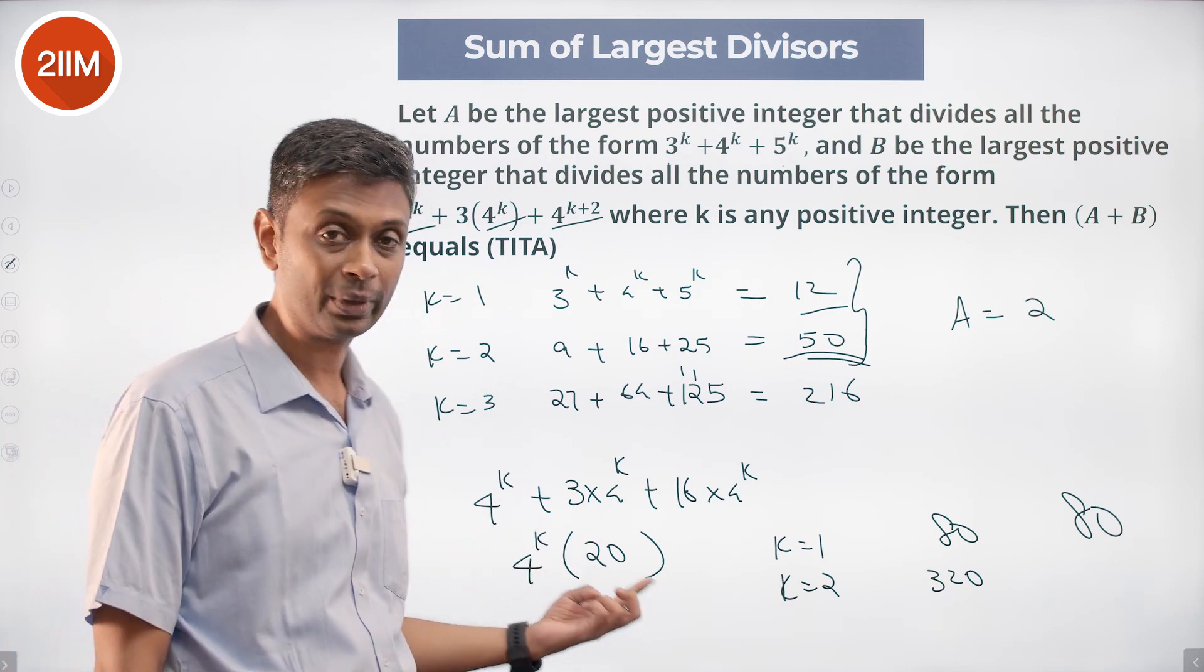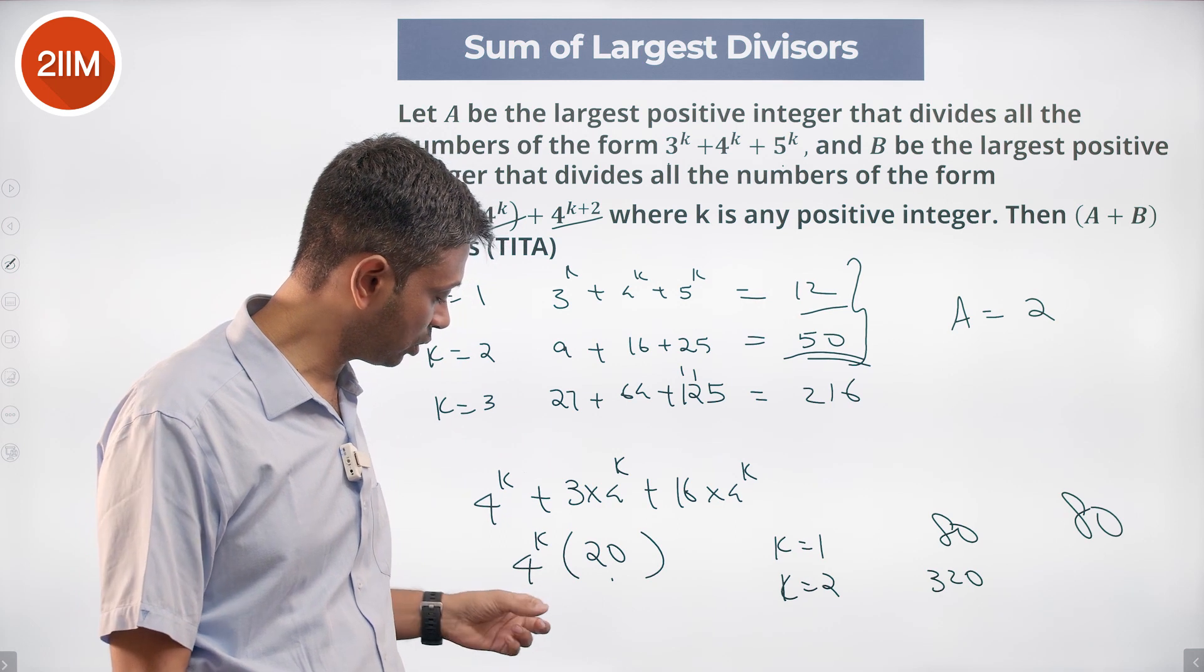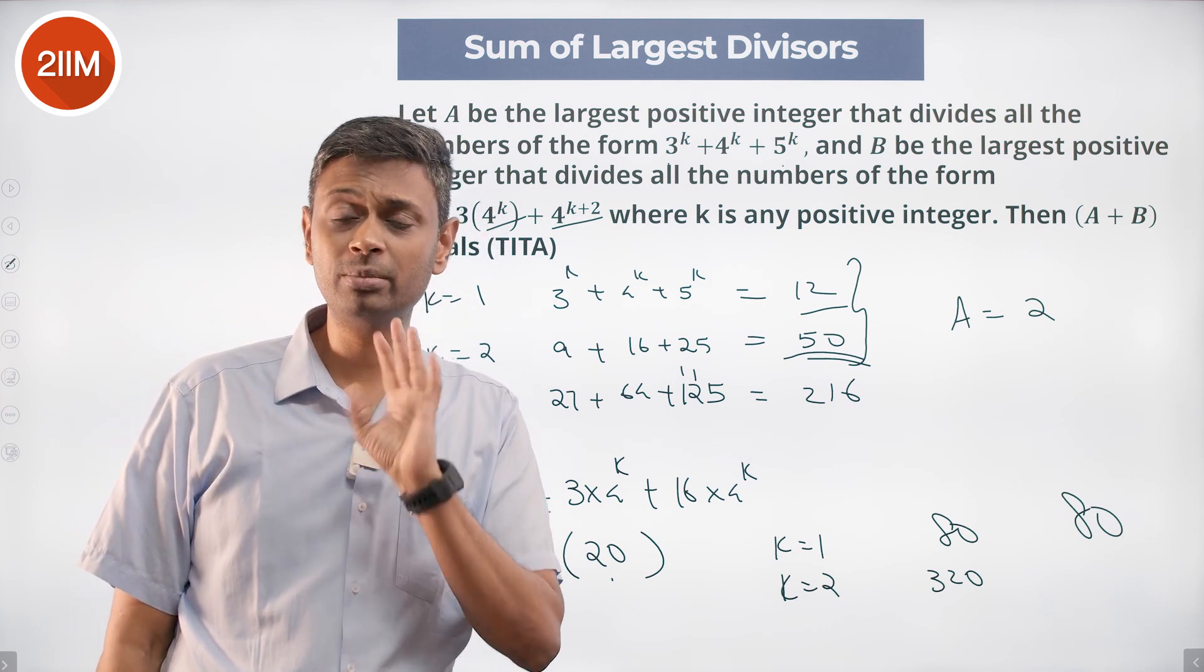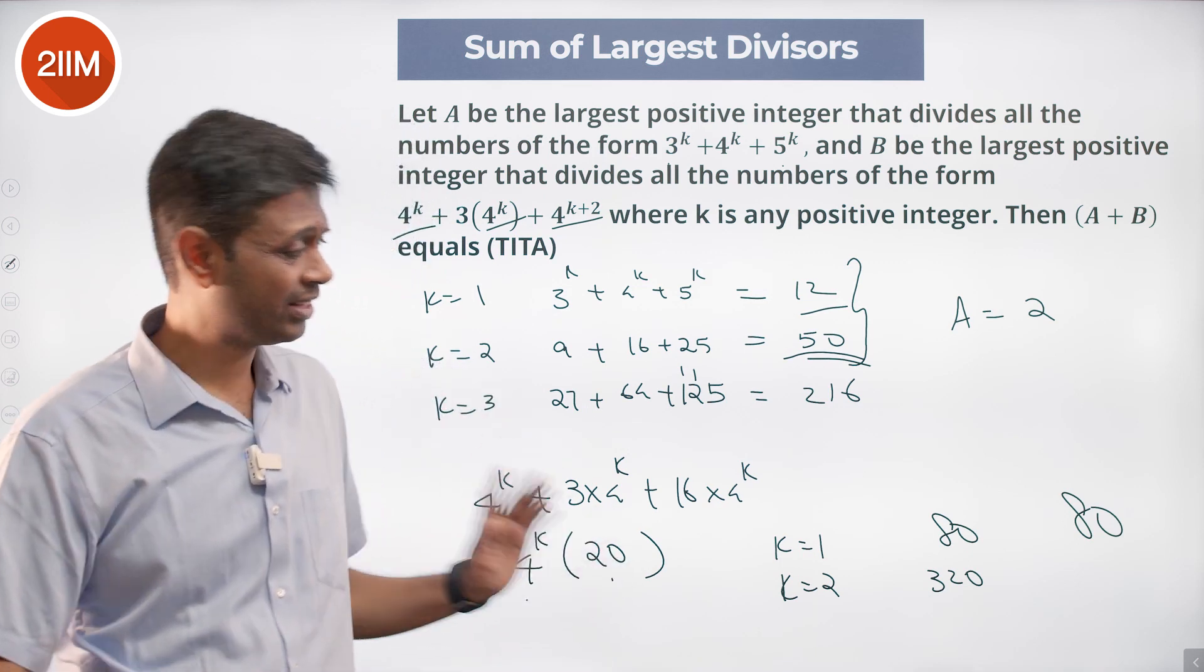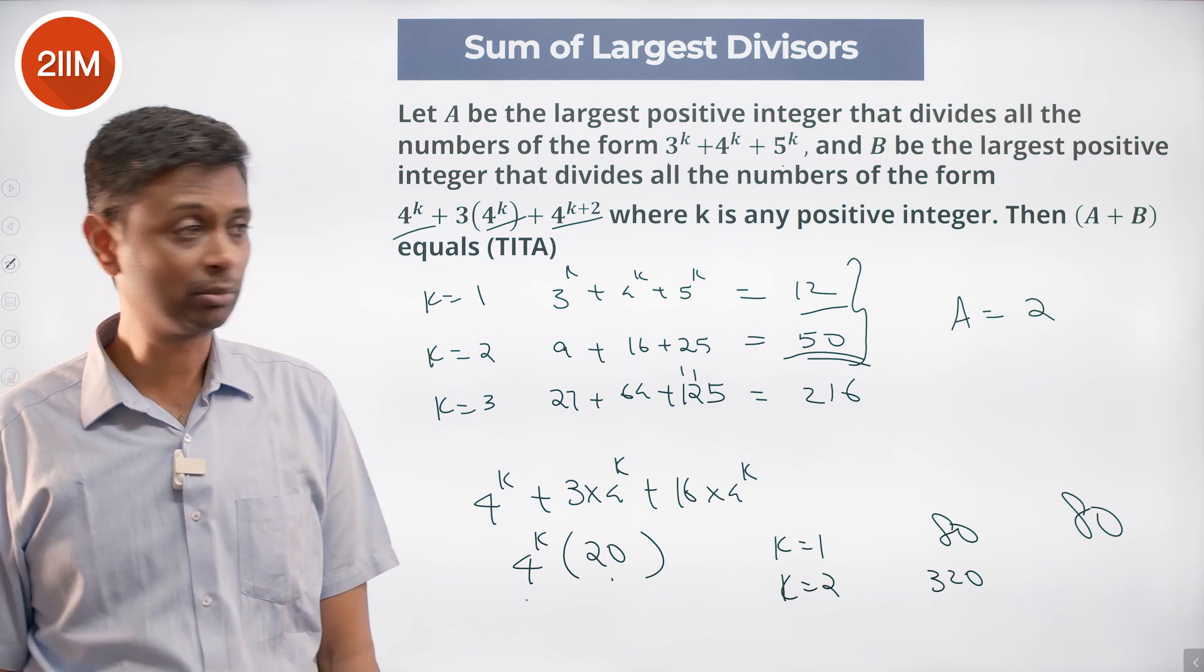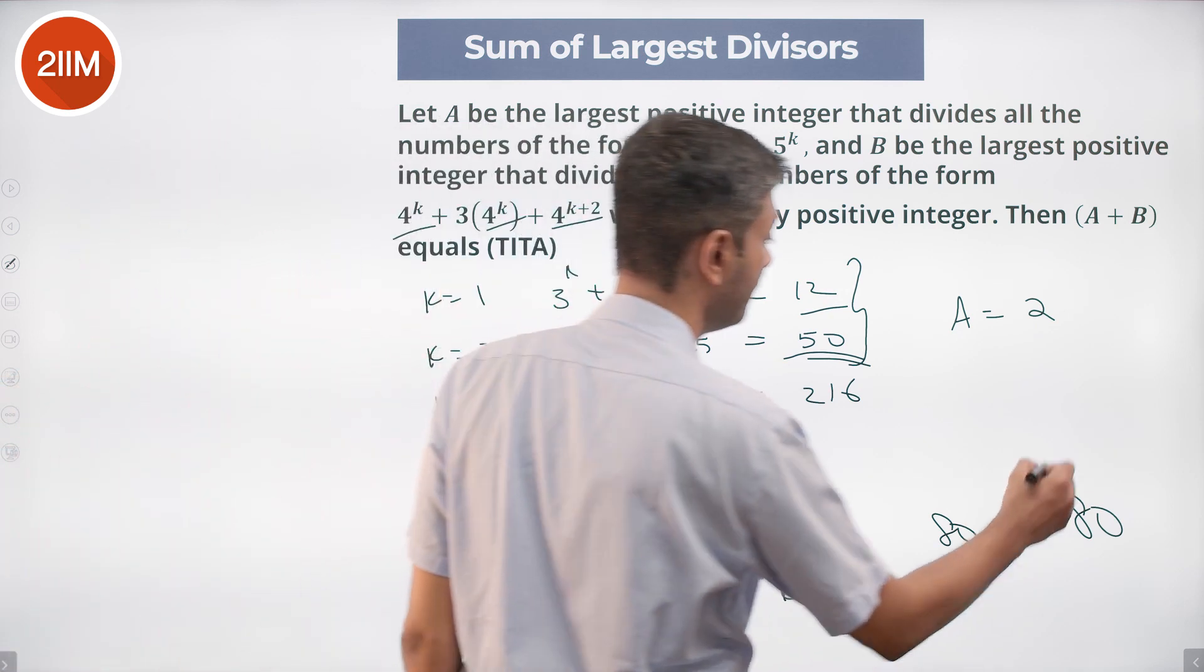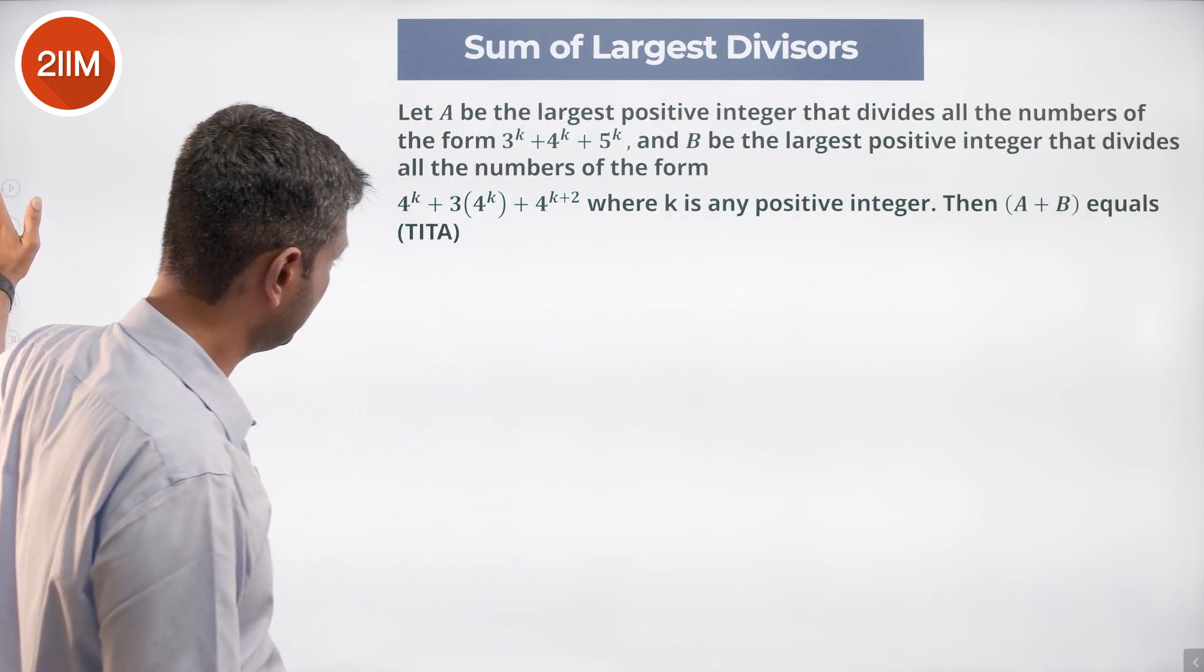This number is always a multiple of 80. It is 4^k into 20, k is at least 1. This gives us a 20, this gives us a 4. So the smallest number, the largest number that will divide this always is 80. K is 1 into the 80. Anything more, it will be more than 80. So 80 is definitely in the number. A is 2, B is 80. Add these two, we get A + B to be 82.